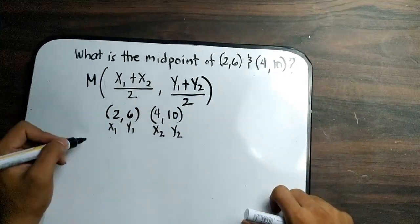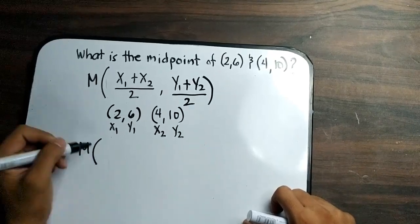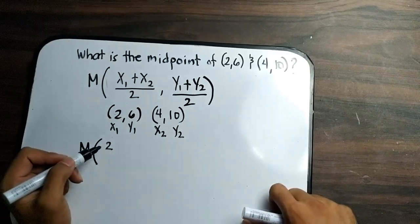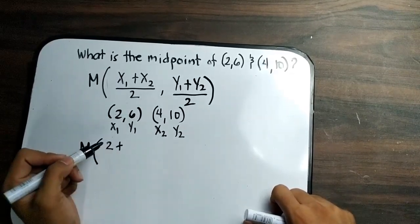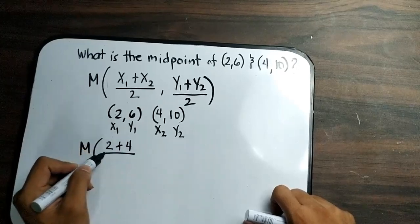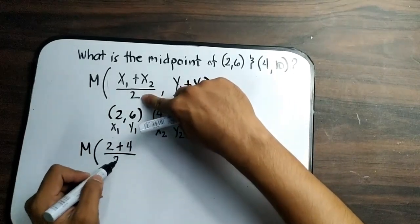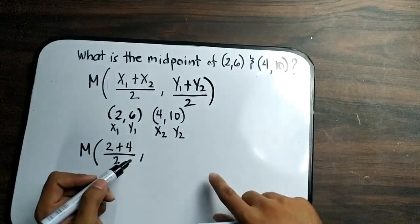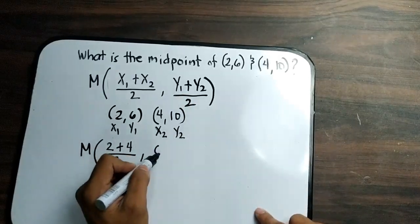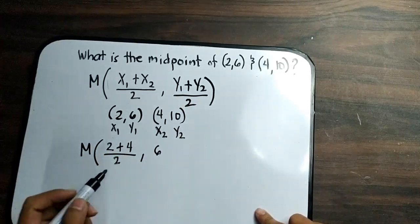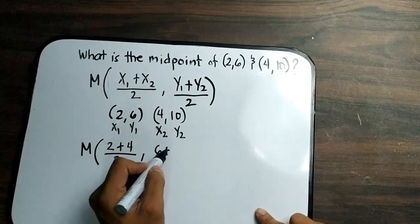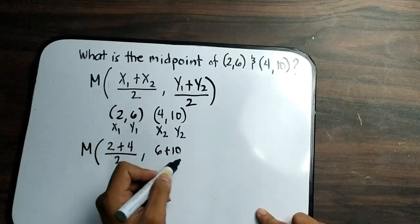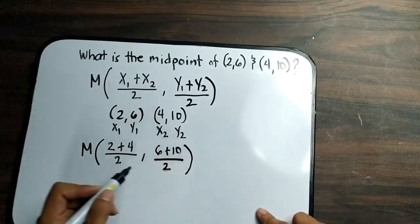Let's start. We have here the midpoint M. Your x sub 1 is 2, plus x sub 2 is 4, all over 2, as you can see in your formula. And then for the average of y coordinates, we have y sub 1 as 6 plus your y sub 2, which is 10, and then divide it by 2. That's it.